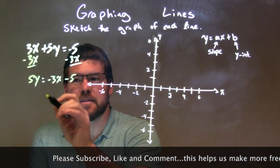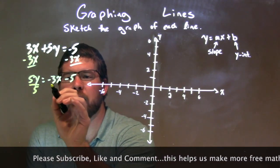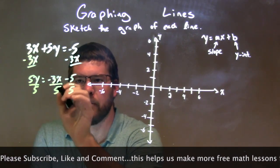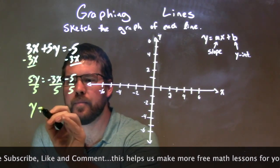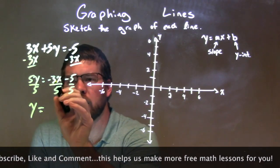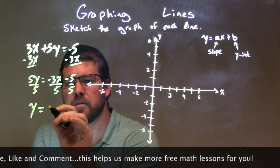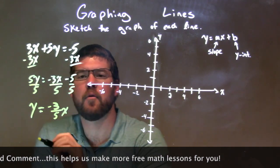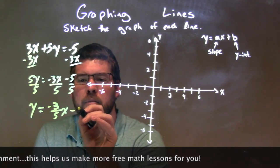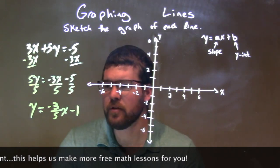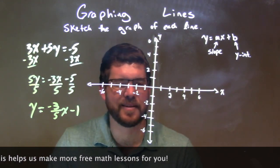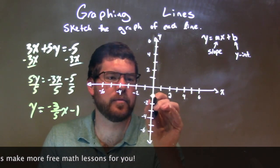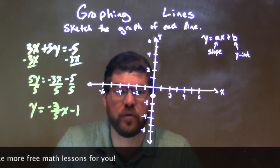So from there, I'm headed to y by itself still, so I'm going to divide by 5. Make sure you divide by 5 on both sides — both parts over here, not just one of them. Y is by itself now. So y equals negative 3 fifths x. And 5 divided by 5 is 1, so we have minus 1. Now we have our slope-intercept form.